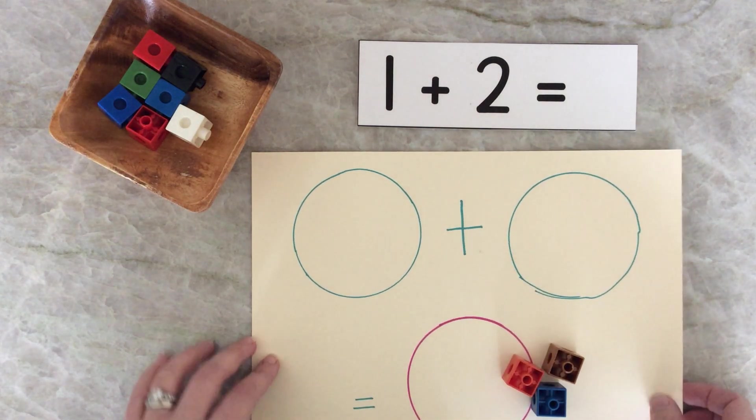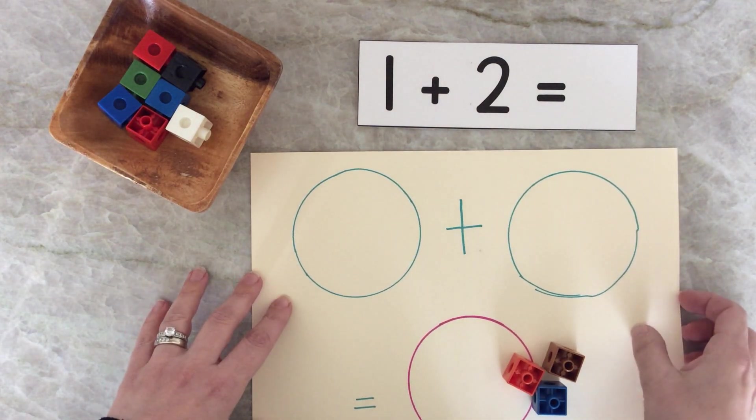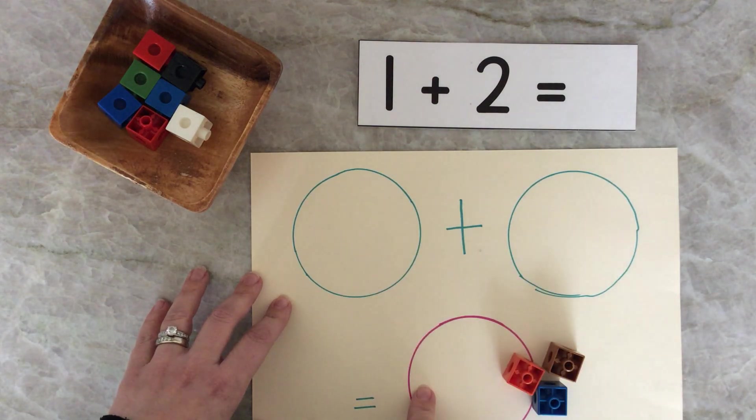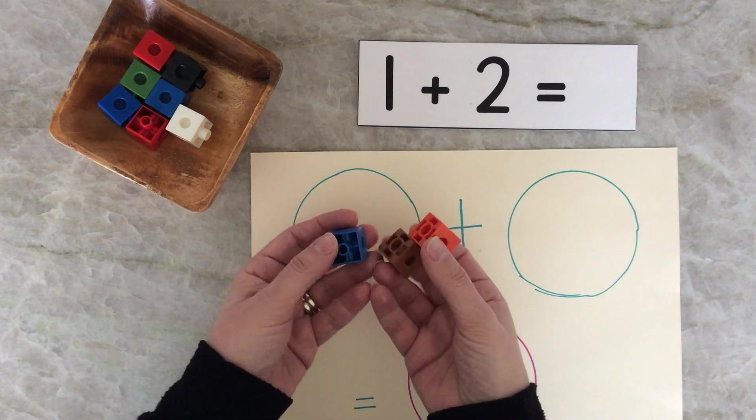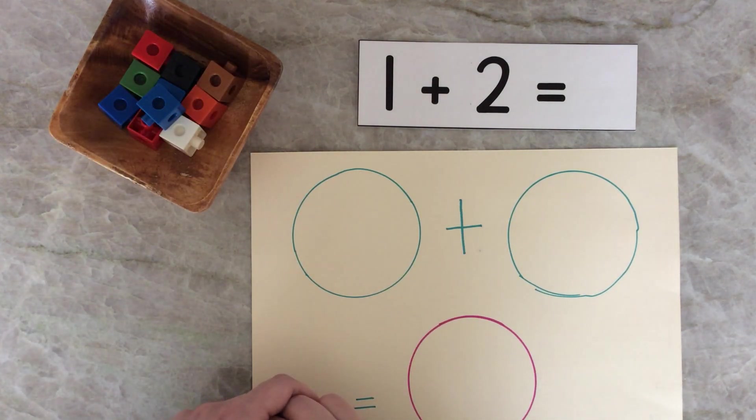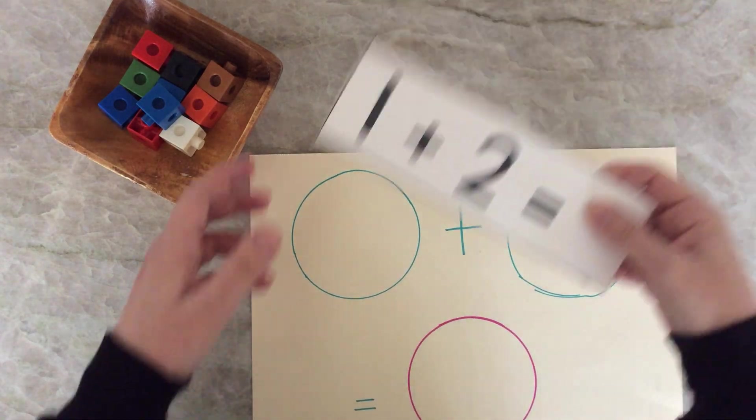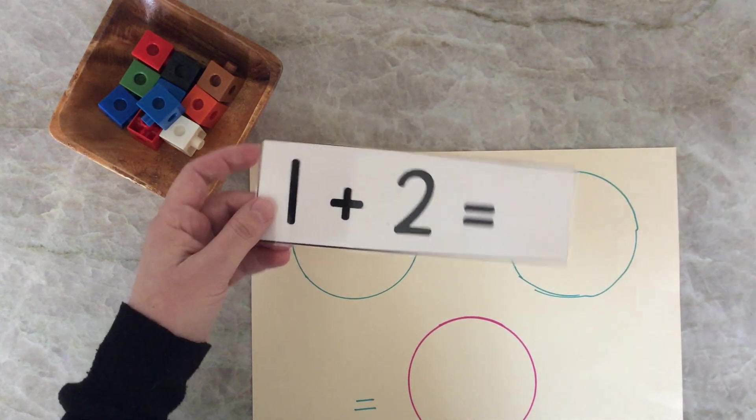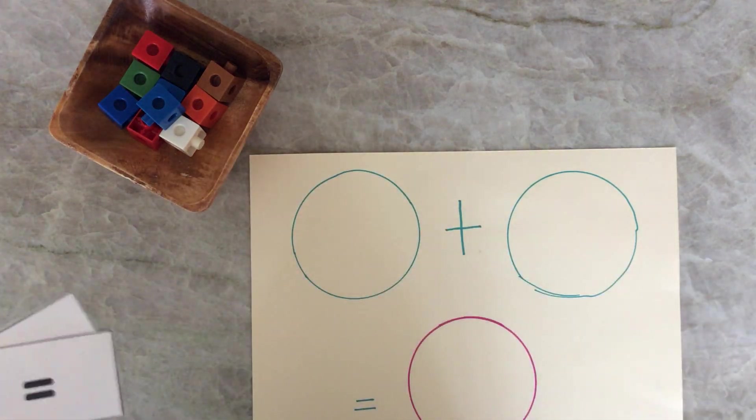You can have some fun with your own addition mat today. You can draw circles just like I did, or you can print out the one that I've attached. You can use any kind of counters you have at home. Maybe you have beans or pasta or even coins. And if you'd like, you can make up your own questions or print out the ones that I've included. Have a great time.